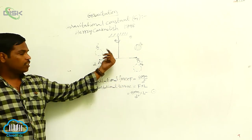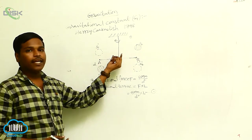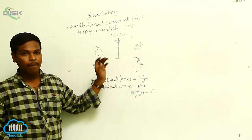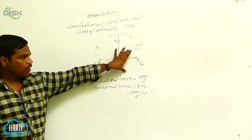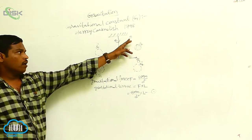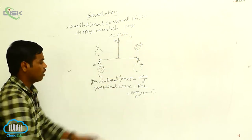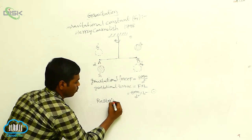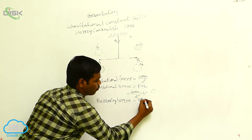When the rod is twisted by an angle theta, after some time it returns to the equilibrium position due to the restoring torque acting on the rod. This restoring torque is directly proportional to the angle theta.